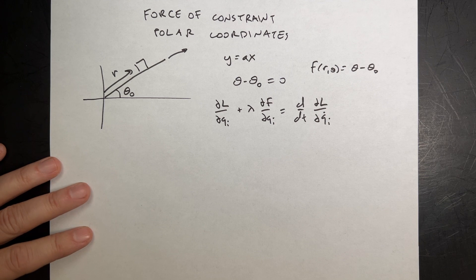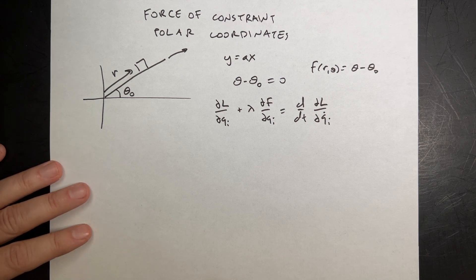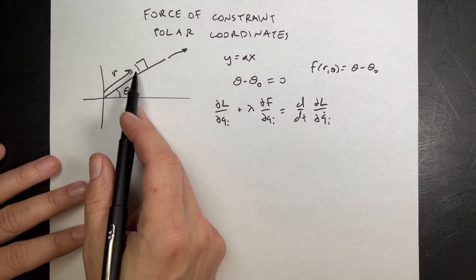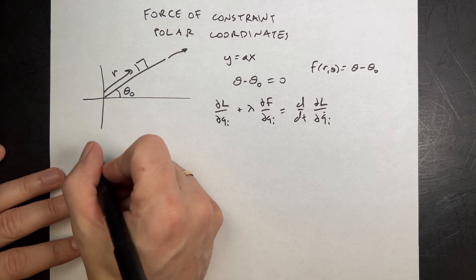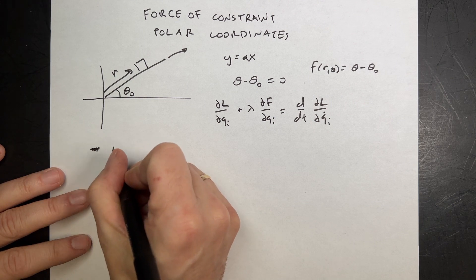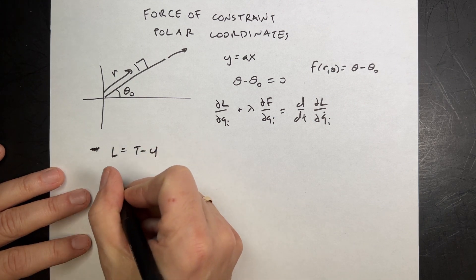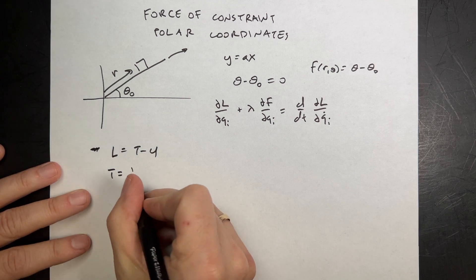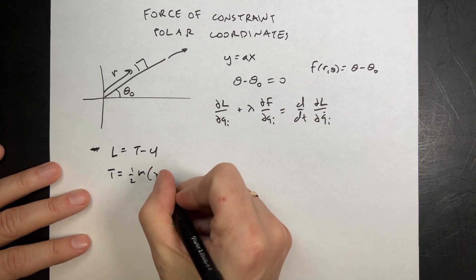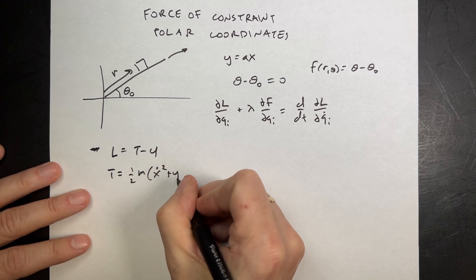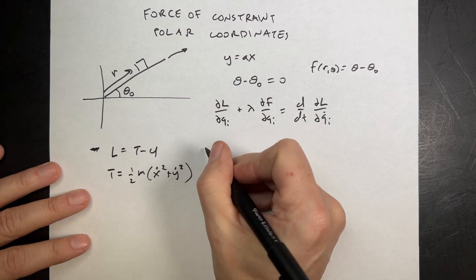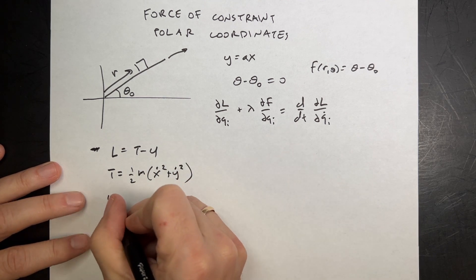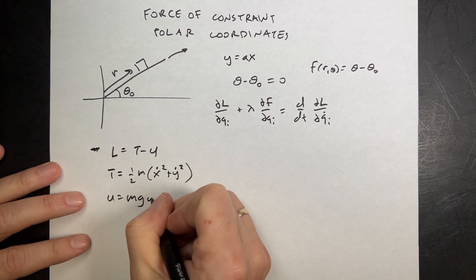We need to write down the Lagrangian in polar coordinates. The Lagrangian is L equals T minus U. T is easier to write in Cartesian coordinates, so I can say it's one-half m times (x-dot squared plus y-dot squared), and U is mgy.